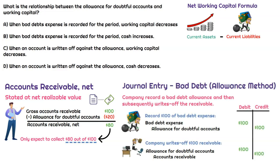Here's a quick example of a journal entry we would record when we record bad debt expense. Say we have a customer who says they're not going to be able to pay for a few months out. If I'm the company, I'm thinking: what are the chances they pay? If they had a $100 invoice, I might say I'm going to reserve for that — record it to bad debt expense. We would debit bad debt expense and credit Allowance for Doubtful Accounts for $100.